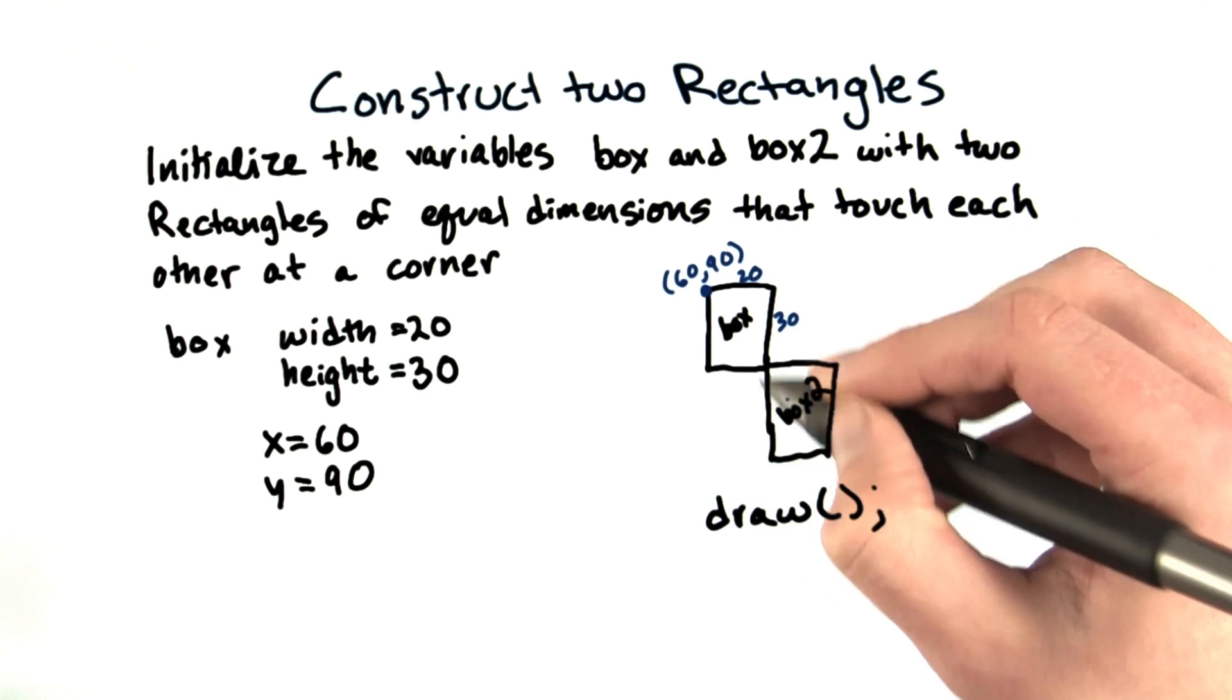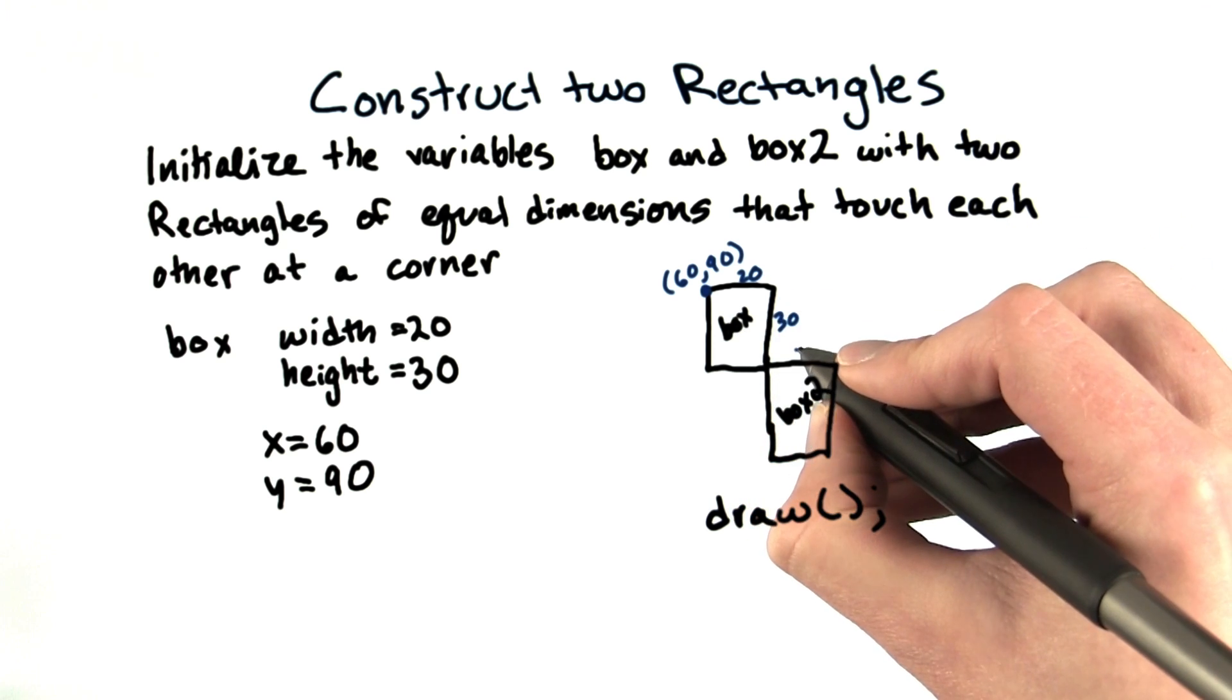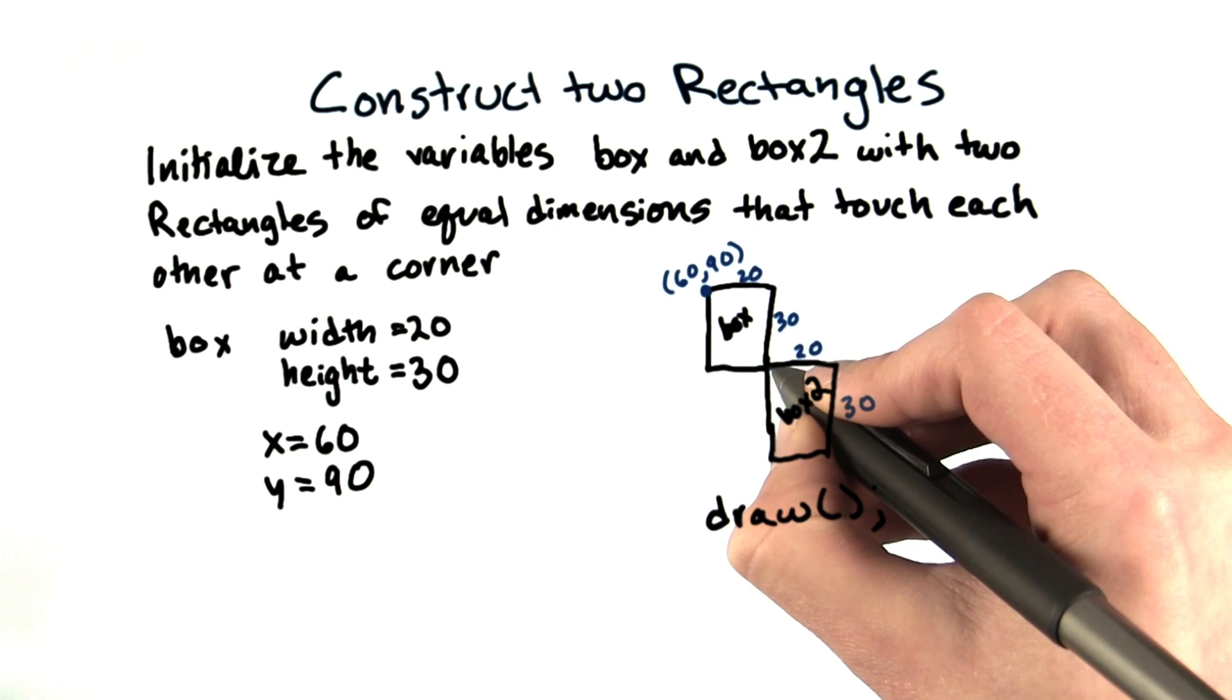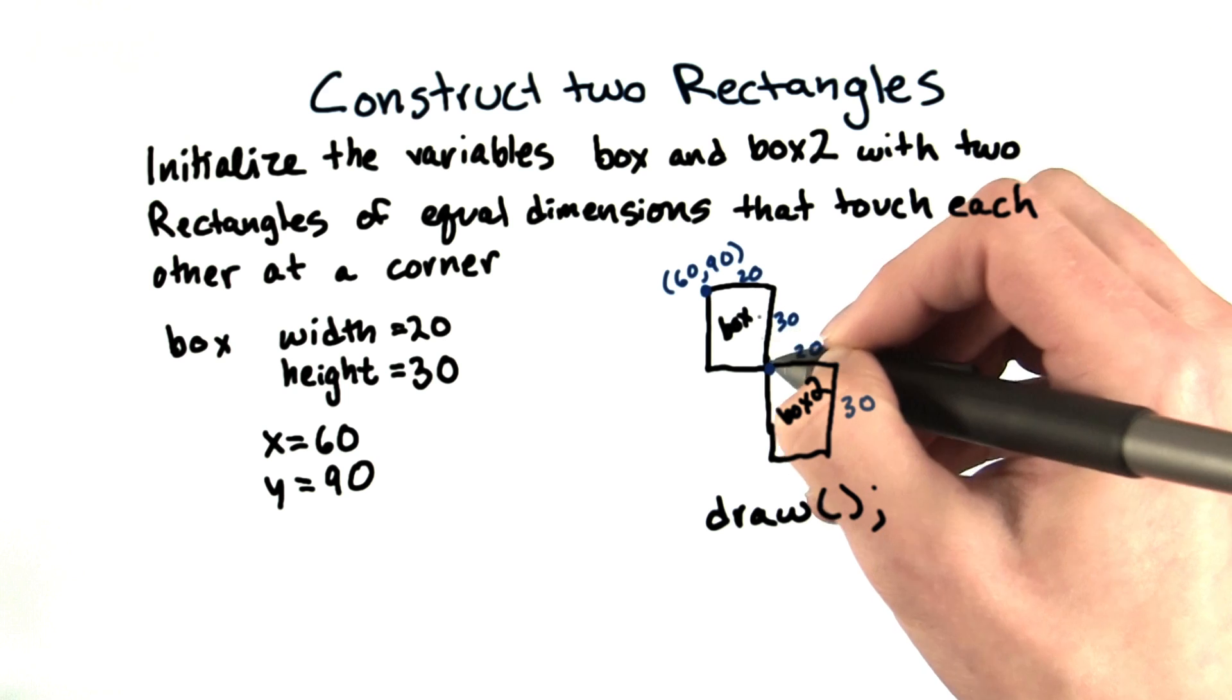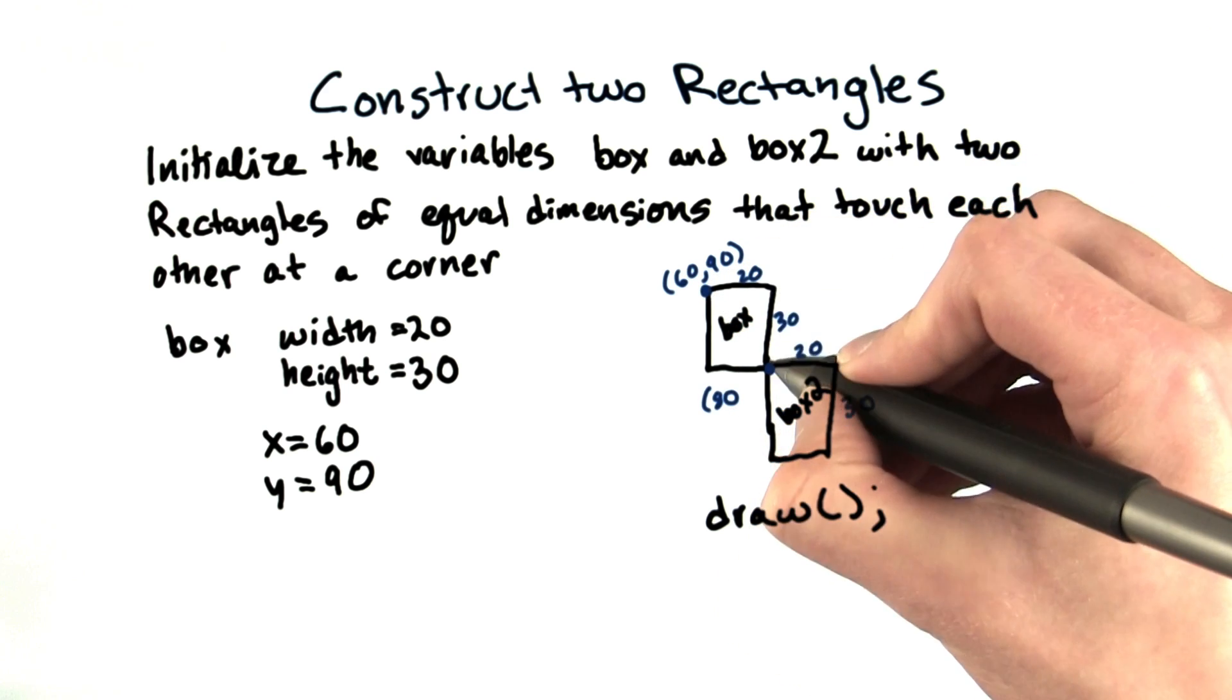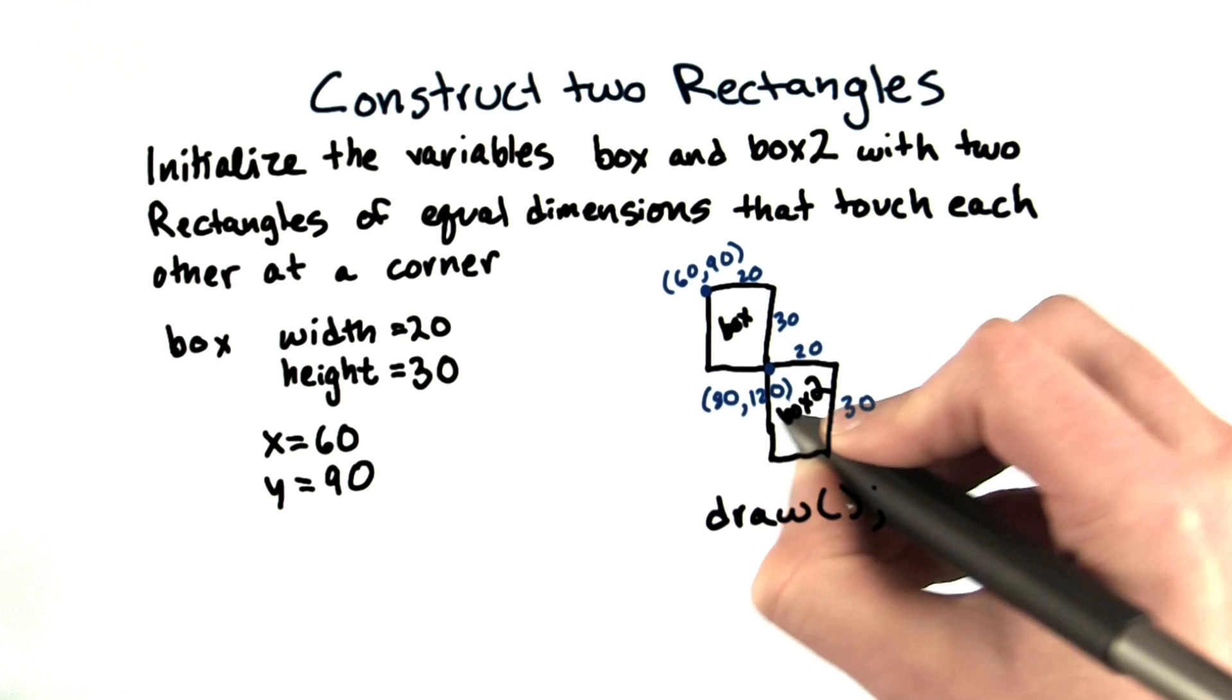The question asks for the dimensions of both boxes to be the same. So this one will also be 20 wide and 30 tall. I need to figure out where this upper left corner is. It looks like it's 20 to the right from 60, so that should be at 80. And it's also 30 down from 90, so that should be 120.